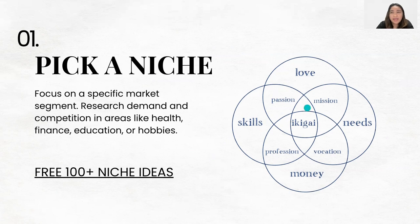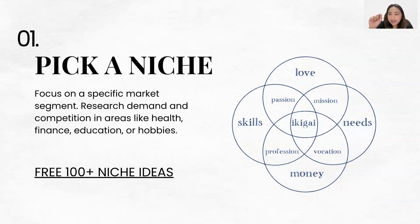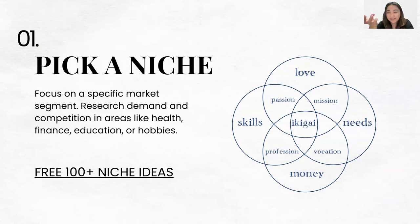Here I've shown you a graph called the Ikigai — the Japanese way of knowing your purpose. Find your Ikigai. It's where four things overlap: what you love, what you're good at, what helps others, and what you can make money from. Put them together and that's your Ikigai.